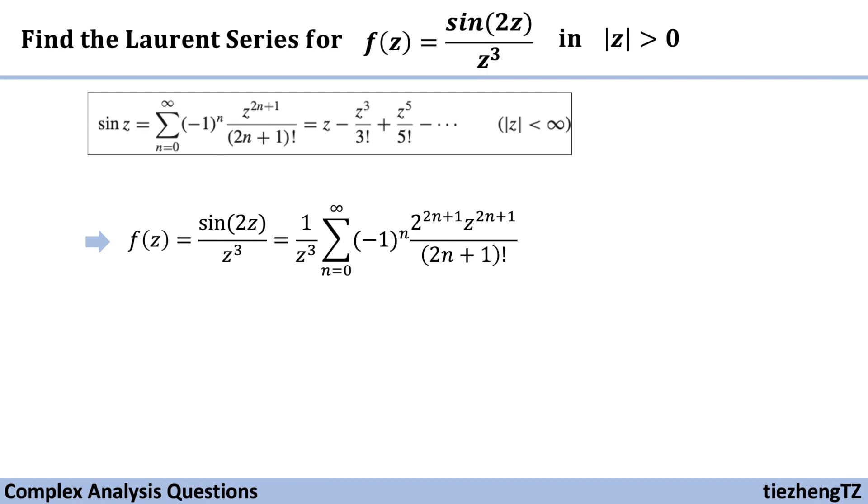And of course, we can just move 1 over z to the cube within the sum. So now the power of z has become 2n minus 2. And this is the final result showing the Laurent series for this given function in this given domain.